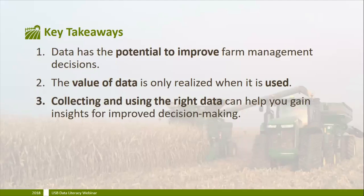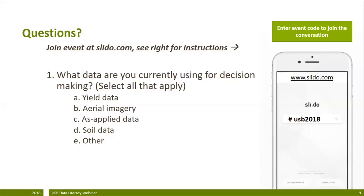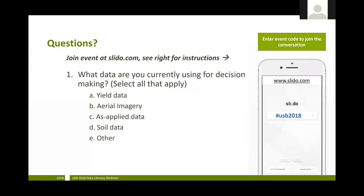To summarize these data pillars: first, data has the potential to improve farm management decisions, and you're only going to realize the value of your data if you're using it. Collecting and using the right data can help you gain insight for improved decision making. Our question for you is: what data are you currently using for decision making on your farm? With seven responses so far, yield data is by far the most popular choice, but aerial imagery and soil data are also pretty high.